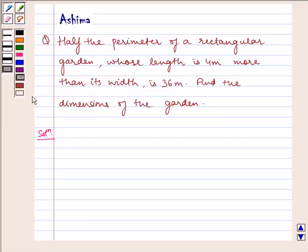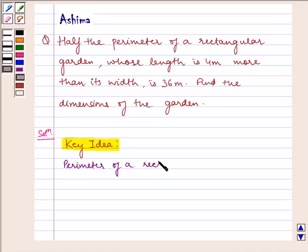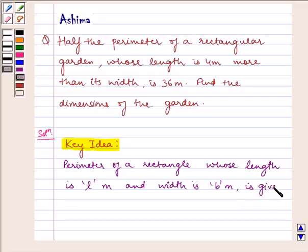Now let us first write the key idea that we would be using in the problem. Perimeter of a rectangle whose length is L meter and width is B meter is given by Perimeter equals 2 into L plus B.